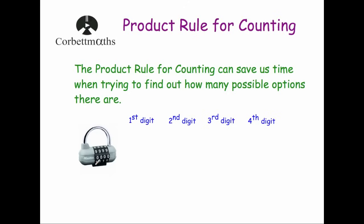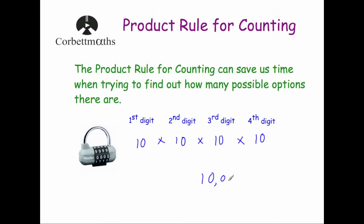For the first digit there are 10 different numbers we could have: zero to nine, so that's 10 digits. For the second digit there are again 10 combinations, for the third digit 10 options, and for the fourth digit 10 options. To find the total number of possible combinations we multiply these together: 10 × 10 × 10 × 10 = 10,000. So there are 10,000 different combinations for this lock.